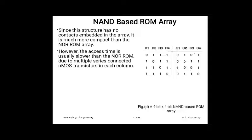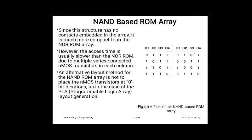The disadvantage of the NAND based ROM array is that the access time is slower than the NOR based ROM, due to the multiple series-connected NMOS transistors in each column. So the advantage is lesser area, but the disadvantage is greater access time.